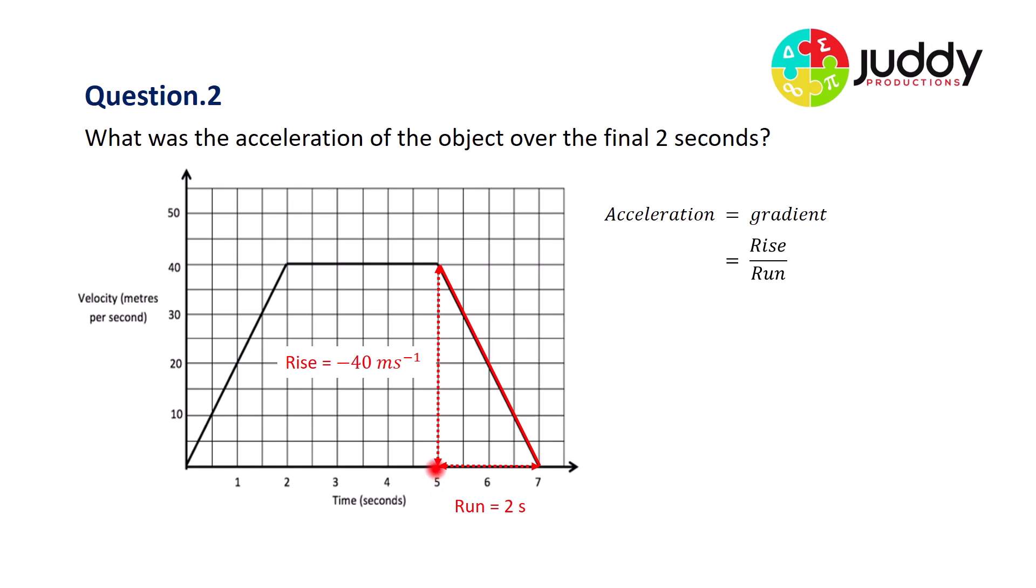We've got a time from five across to seven, the difference of which is two. So negative 40 divided by two gives us the number of negative 20, and once again, the units of measurement are meters per second per second, which is written as meters per second squared. Now we can describe that as negative 20 meters per second squared forward, or alternatively, we can describe the acceleration as 20 meters per second squared backwards.